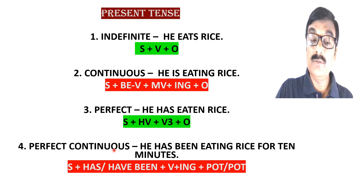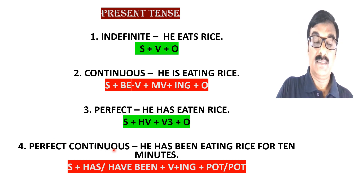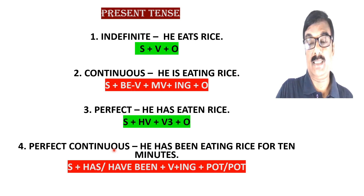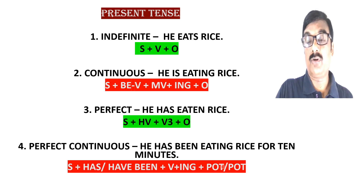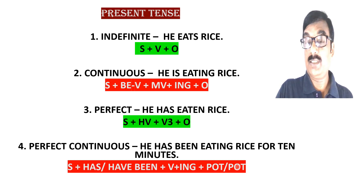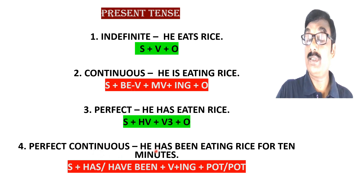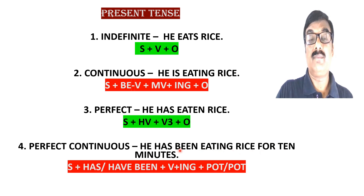Next is present perfect continuous tense. When in the present time some action starts and continues for a long period, we use present perfect continuous tense. The structure is: Subject + has/have been + main verb + ing + point of time or period of time. Point of time uses 'since' (e.g., since four o'clock, since January, since 2020), and period of time uses 'for' (e.g., for two hours, for three minutes). Example: 'He has been eating rice for 10 minutes.'